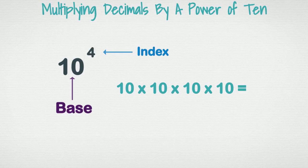When looking at the powers of ten as an exponent, the index tells you how many zeros your answer should have. So going back to our example of ten to the fourth, the answer would be one followed by four zeros. Ten thousand is the standard form of ten to the fourth power.